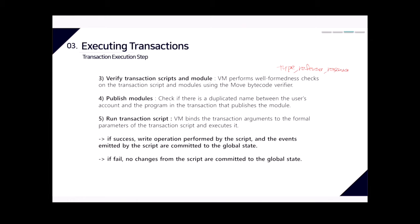Step five is run transaction script. The Move virtual machine binds the transaction arguments — such as recipient account address or the number of Libra coins to send — to the formal parameters of the transaction script. If execution completes successfully, write operations and emitted events are committed to the global state. If execution fails, no changes from the script are committed to the global state.